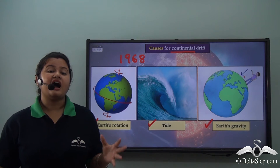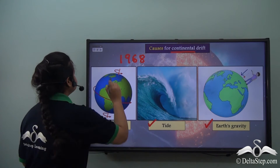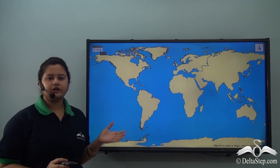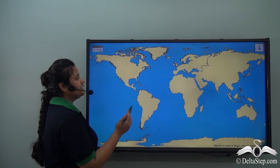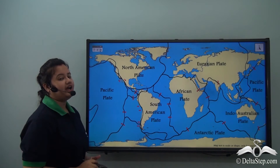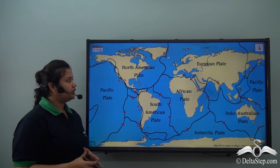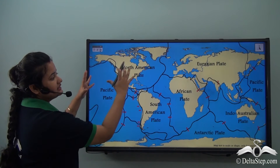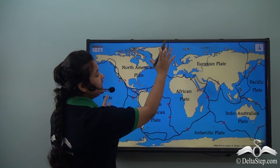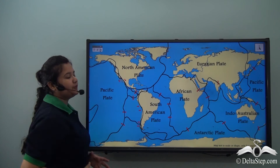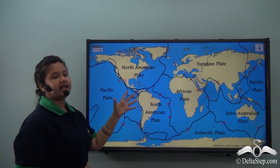Plate tectonics is an important cause for continental drift, so now let's see how these two theories are correlated. This is our world map, which represents the continents and oceans found on Earth's surface. The Earth's surface is divided into several tectonic plates. In this image, we can see that the Earth's surface is divided into several tectonic plates, with lines representing the divisions between them.